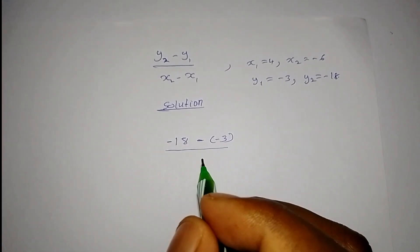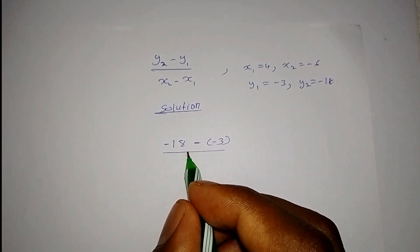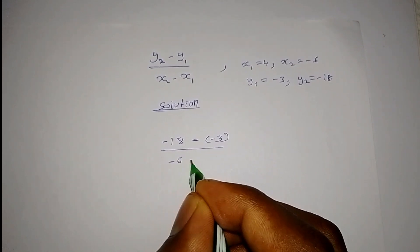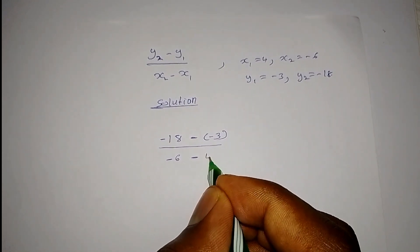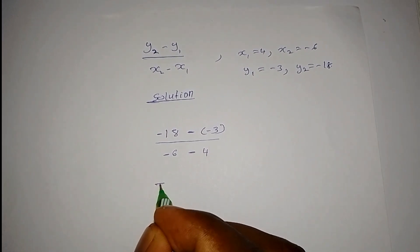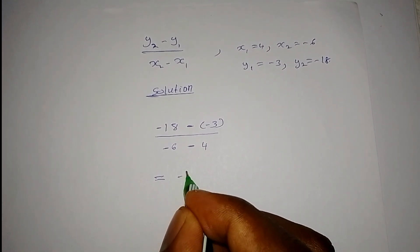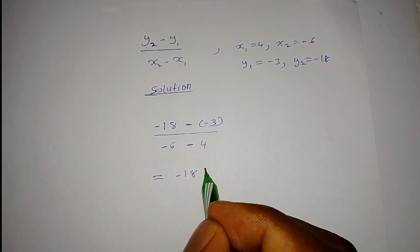divided by x2, which is negative 6, then minus x1, which is 4. This will give us negative 18 plus 3